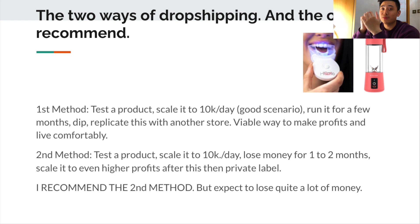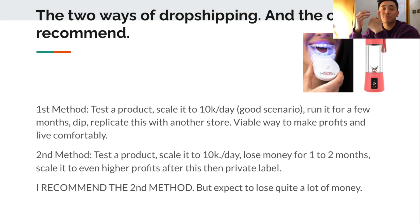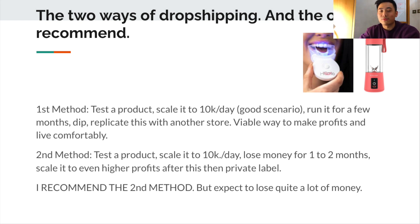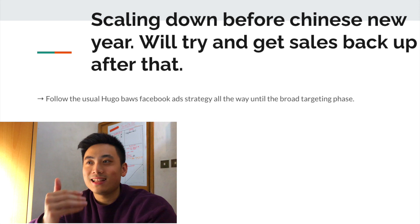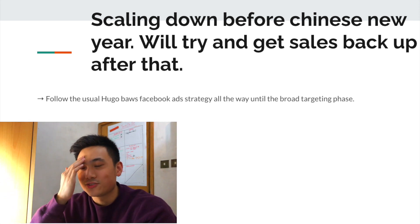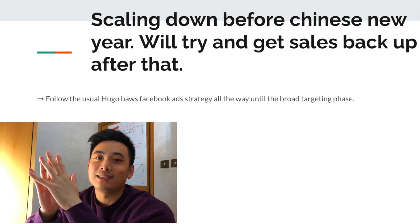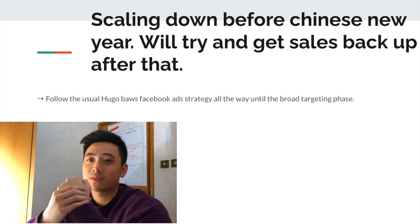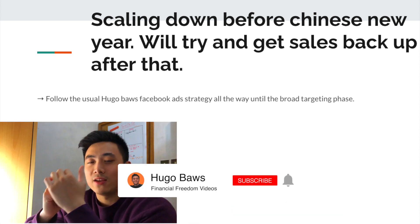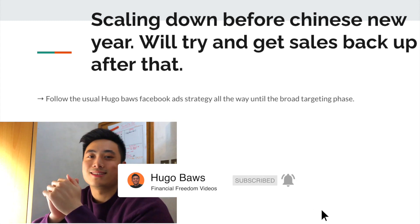What I want to do is test the product, scale it to $10K a day or more, possibly lose money for one to two months, then scale to even higher profits and try private labeling - starting a brand, registering an LLC, shipping inventory. At that point I'd personally fly to China to meet my supplier and have serious meetings with my VAs and customer service representatives about business goals. Scaling down before Chinese New Year is a tough decision, but it's the right thing to do. Follow the Hugo Boss Facebook strategy if you're not sure which to use - like, comment, and subscribe!